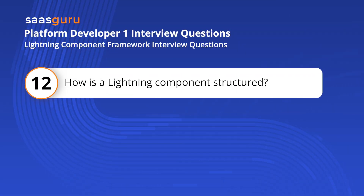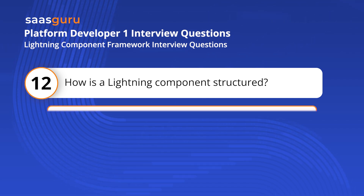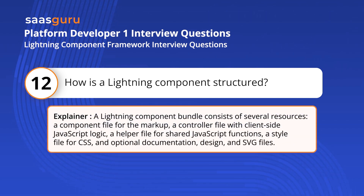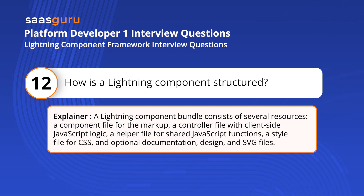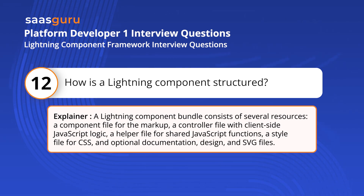Question 12: How is a Lightning Component structured? A Lightning Component Bundle consists of several resources: a component file for the markup, a controller file with client-side JavaScript logic, a helper file for shared JavaScript functions, a style file for CSS, and optional documentation, design, and SVG files.